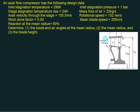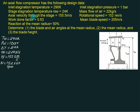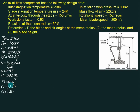We also have the annular area. To summarize the given data: inlet stagnation temperature T01 is 290 K, P01 is 1 bar, stagnation temperature rise is 24 K, mass flow rate is 22 kg/s, flow velocity Vf is 155.5 m/s, rotational speed is 152 rps (i.e., 9120 rpm), work done factor k is 0.93, mean blade speed U is 205 m/s, degree of reaction is 0.5, so alpha 1 equals beta 2 and alpha 2 equals beta 1.